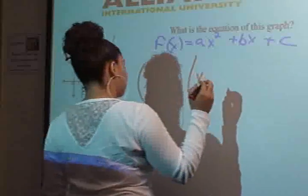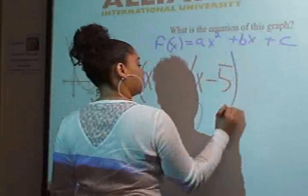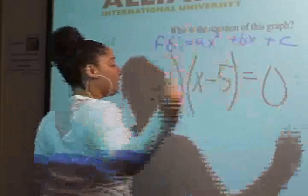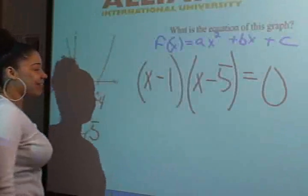And positive 5? x minus 5. Minus 5. I just set those to zero. Okay.